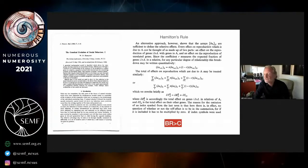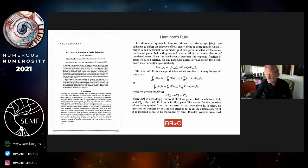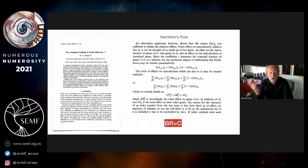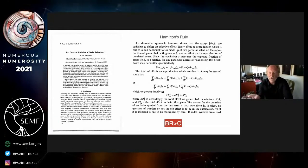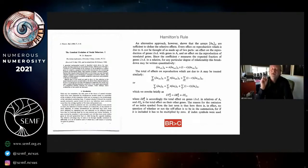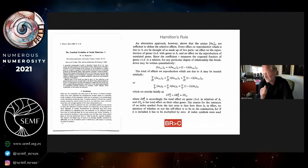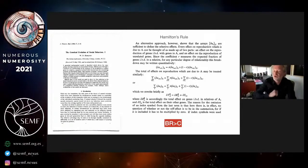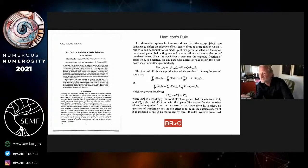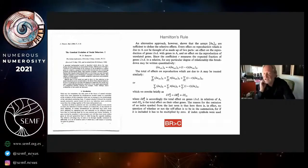B times R should be greater than C if you're going to observe the evolution of an altruistic trait. B here is the benefit to the recipient, R is the relatedness between the actor and the recipient, and C is the cost to the actor. So if I was going to do something nice to Carlos, he would receive a benefit B. I suspect we're not related, but let's say that we were, and I would pay a cost for it. I would only do that if that inequality held.